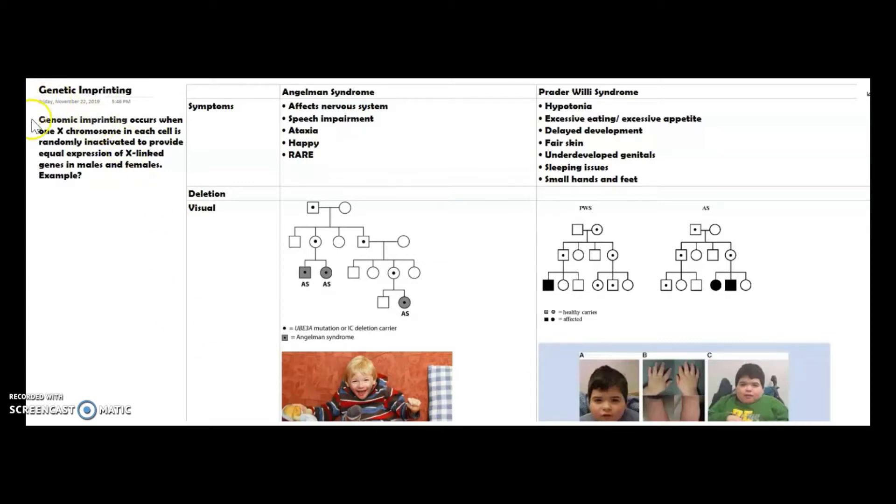I have a very brief definition of genomic imprinting here. When one X chromosome in each cell is randomly inactivated, you have one left. For females, we know we have XX; for males, we have XY.